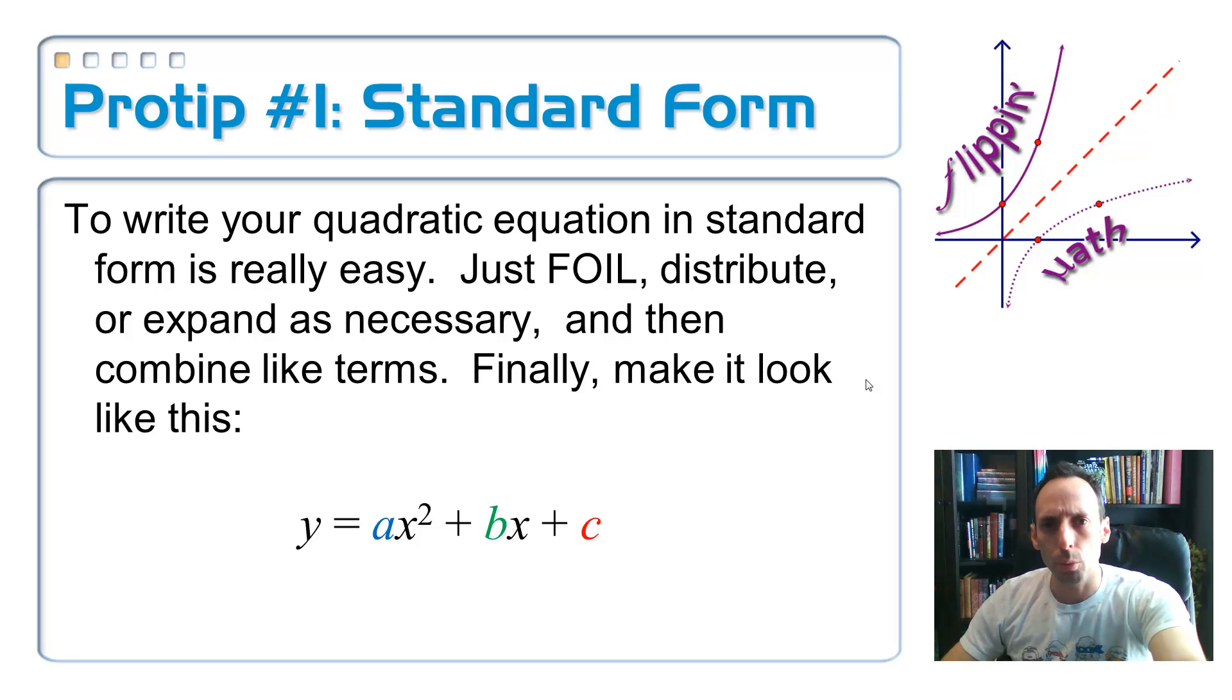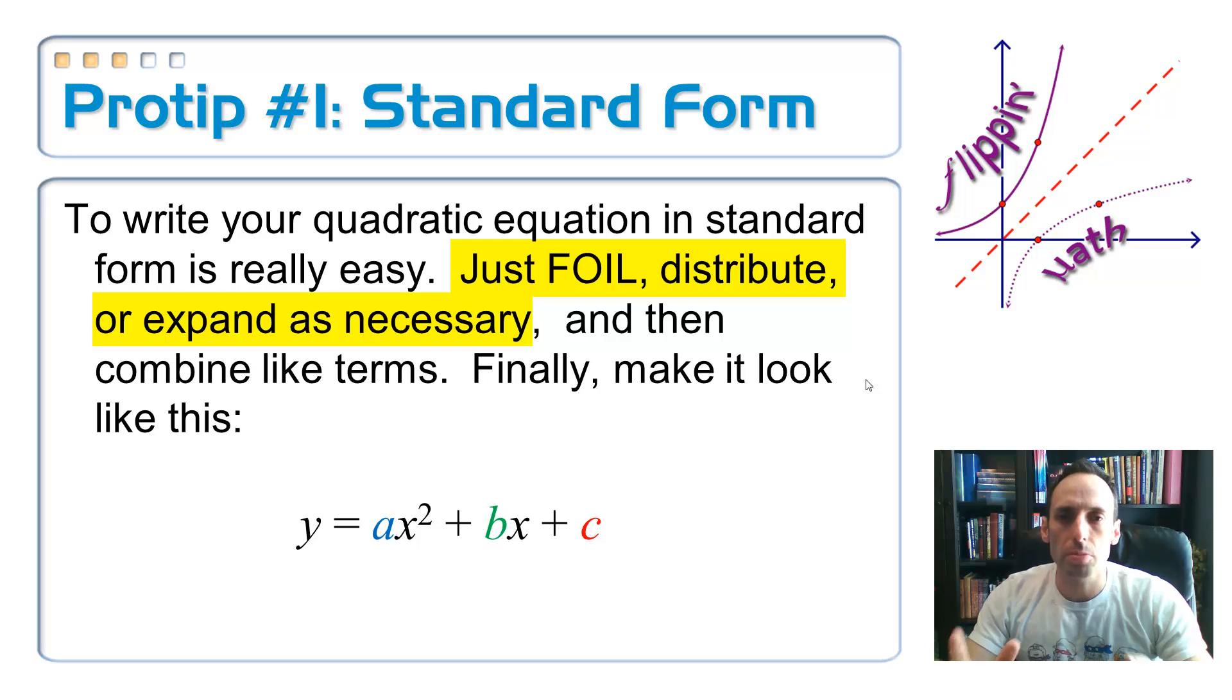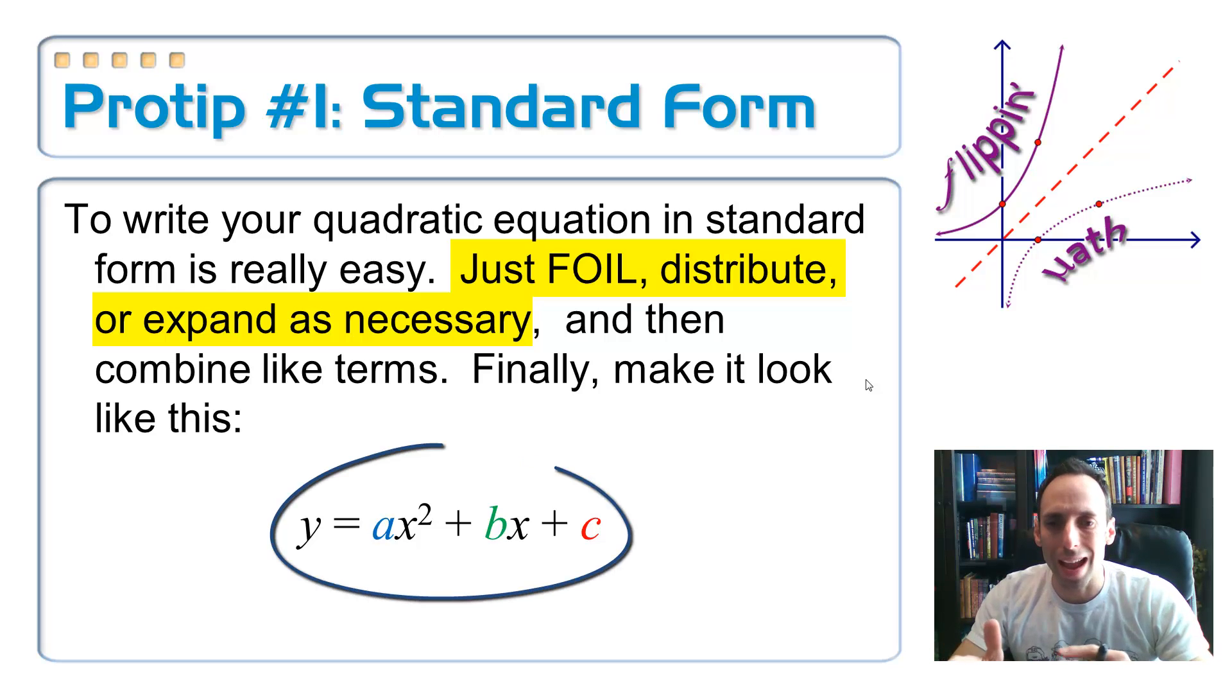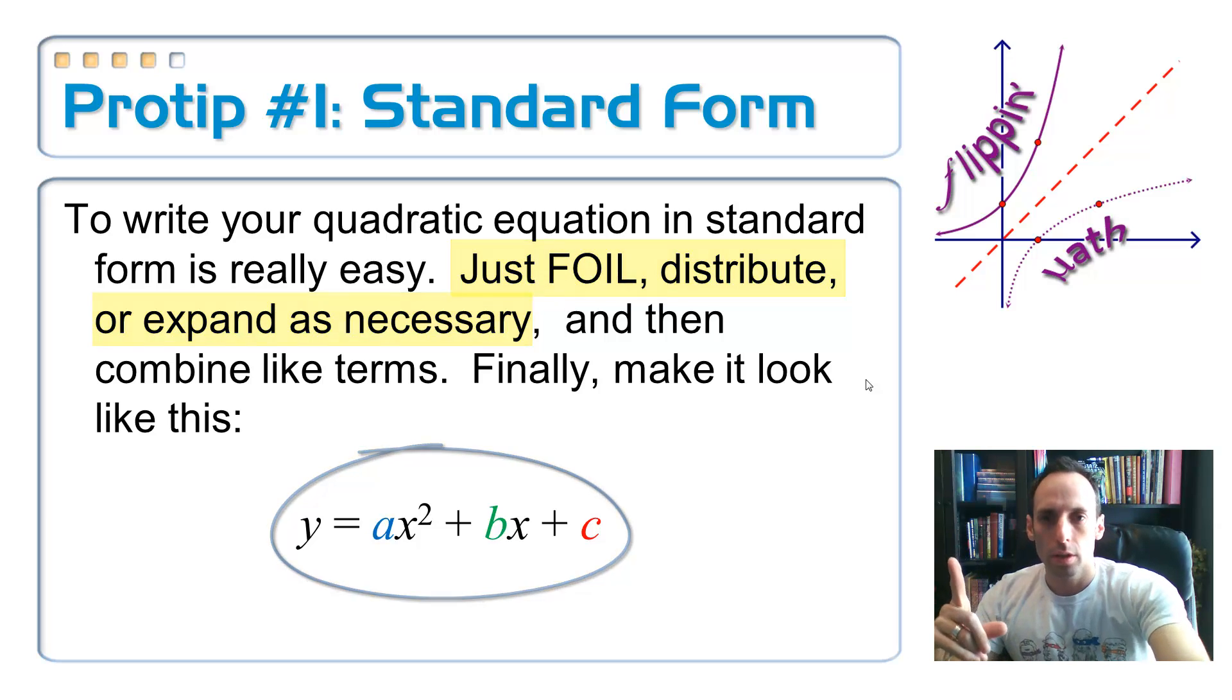So, pro tip number 1 on standard form, putting your equation, your function into standard form. Very, very simple. You're just going to be doing some foiling, some distributing, expanding as necessary, and that's it. Just make your equation look like y equals ax squared plus bx plus c. Super simple.